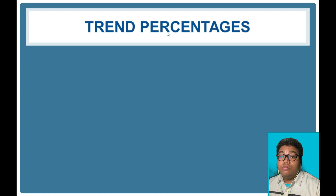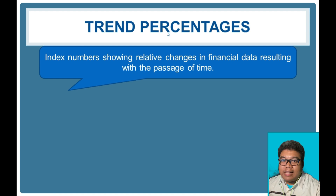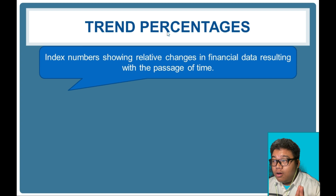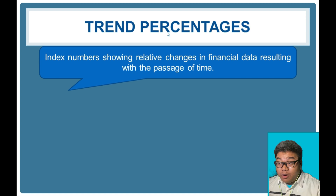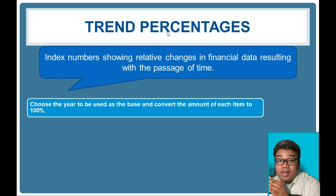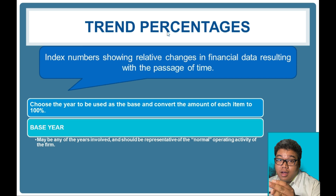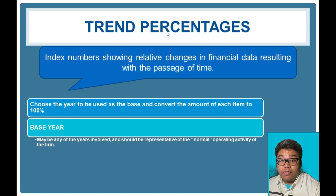Now we go to trend percentages. Trend percentages are index numbers showing relative change in financial data resulting with the passage of time. The difference between horizontal analysis and trend percentages is that trend percentages compare across multiple years using a base year. Horizontal analysis is current year minus prior year over prior year, whereas trend percentages use a base year converted to 100 percent. The computation is current year over base year.